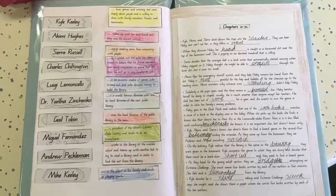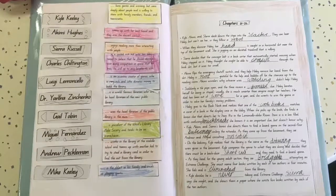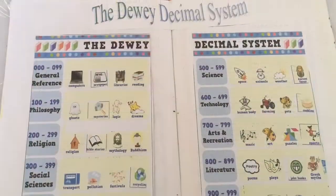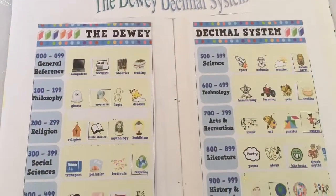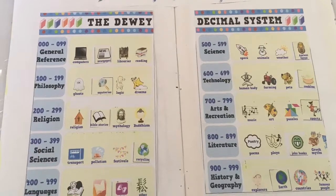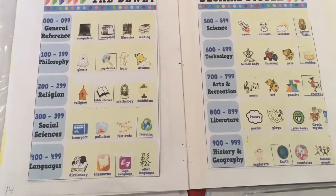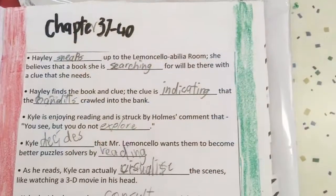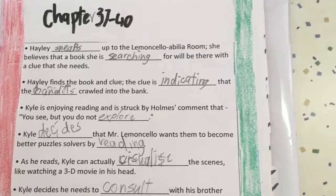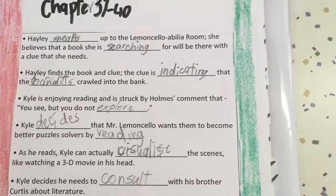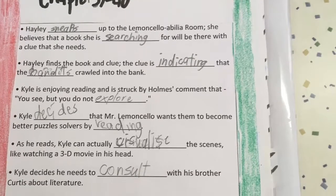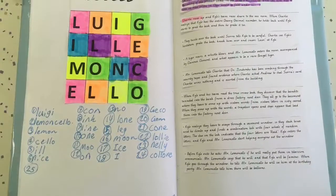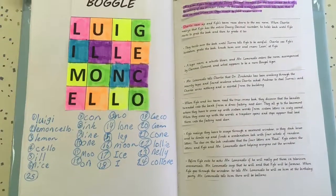We put them in order of what happened in the book and then we did something that happened in the book. On chapters 53 to 56, we read about someone doing a boggle and then we needed to make up our own.